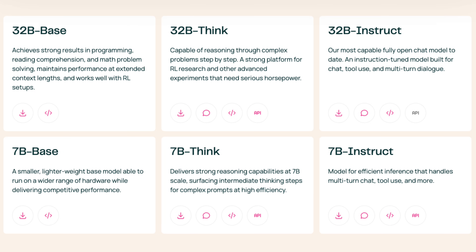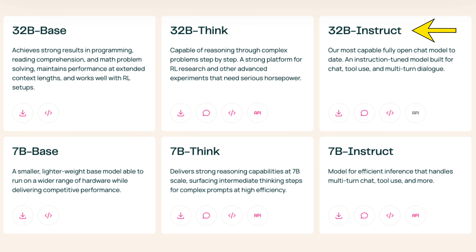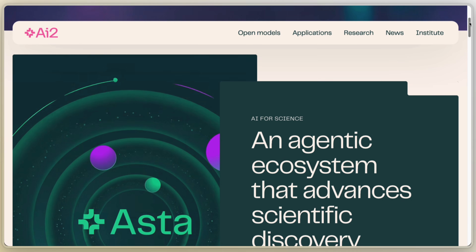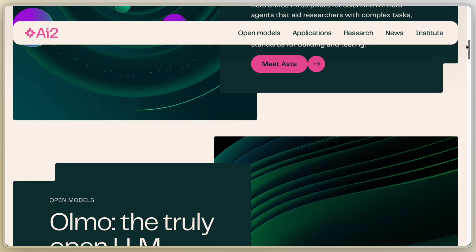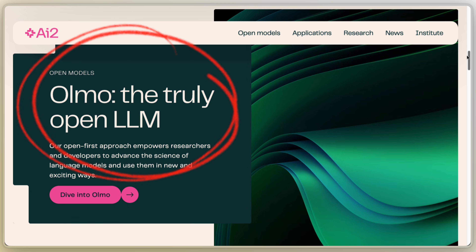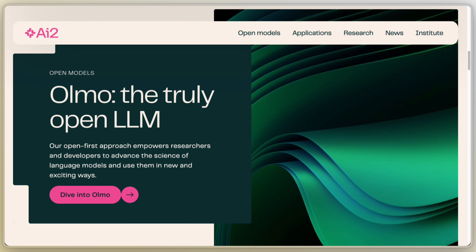Out of all this, we get three variants. Base is purely pre-trained. Think is reasoning-optimized with chain-of-thought traces. And Instruct is chat to tool-use ready. Now ULMO 3 comes from AI2 — it's a nonprofit focused on advancing AI, unlike OpenAI and Anthropic who are after revenue.